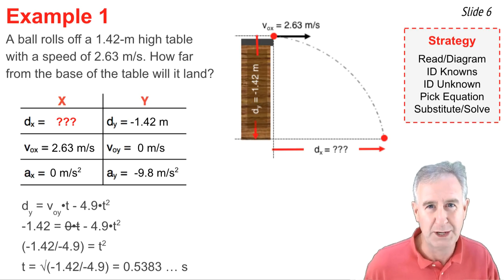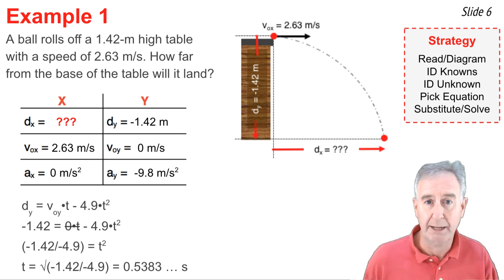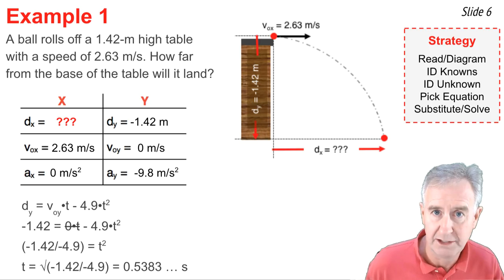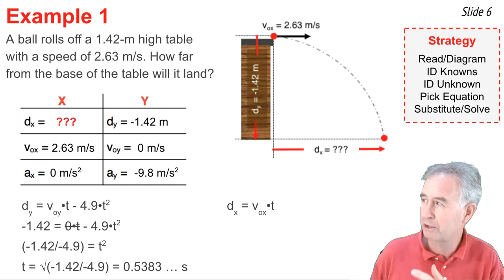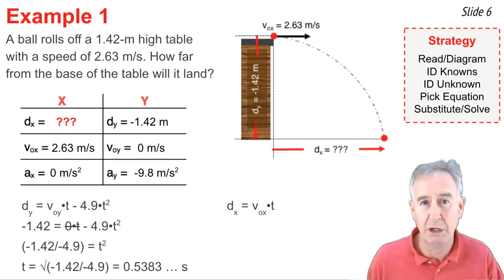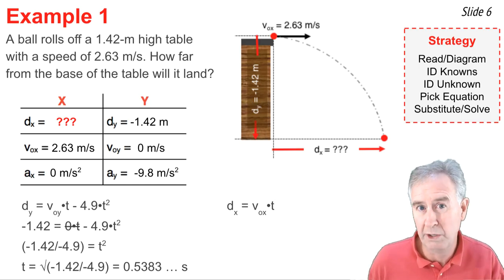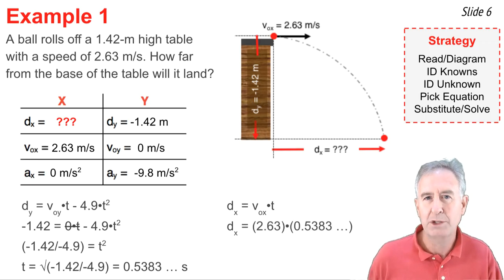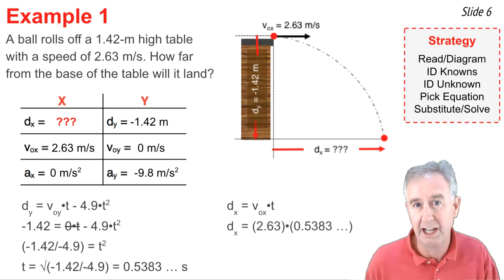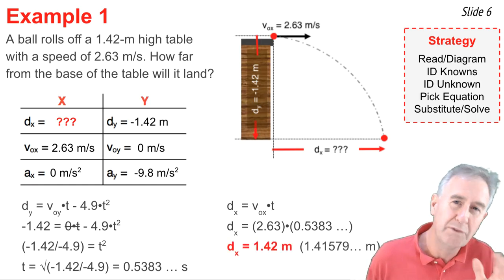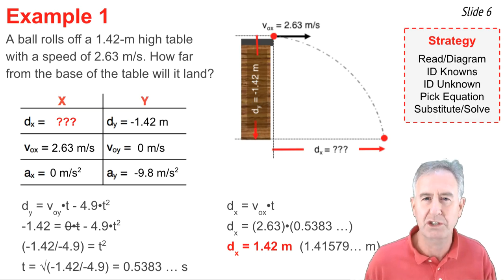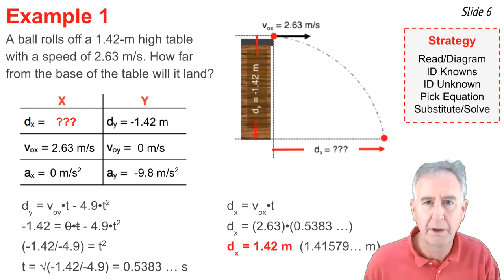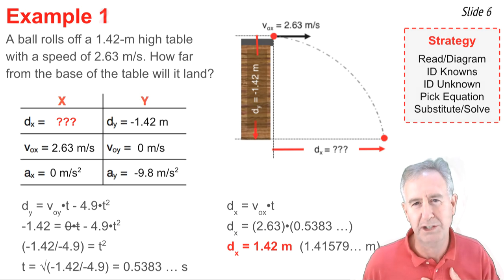Now, take a deep breath. You're ready to finish up. We use the Y column to get the time. So now we're going to use information from the X column to get the DX. Here's the one X equation we have. So DX equals VOX times T. And VOX is given to me as 2.63. And I just calculated the time. So I'm going to take the number on my calculator and multiply by 2.63. And I solve for DX. And then there's rules for how you round things. Typically, they have to do with significant digits. So you just write 1.42 meters, three significant digits.